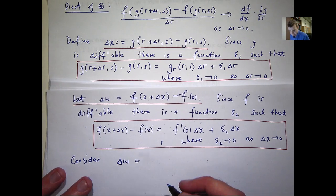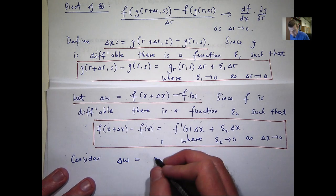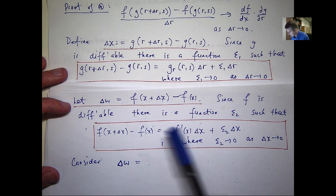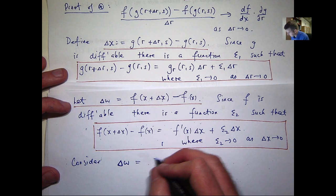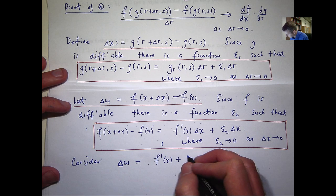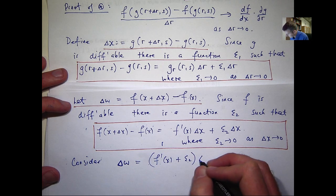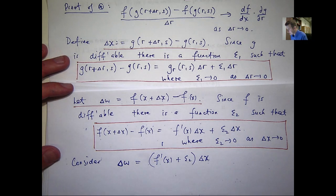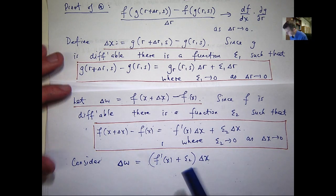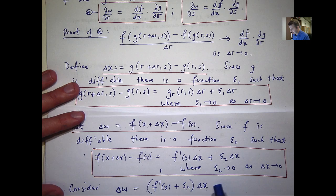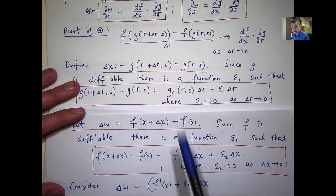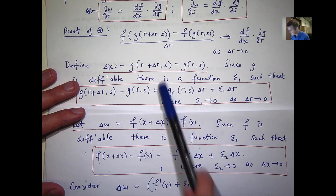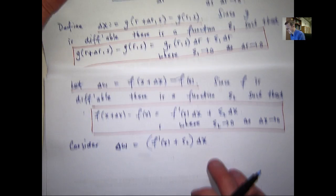So we can write this in terms of this. Now, I'm going to factor out this common factor of delta x. And what I'm going to do then is I can replace this delta x with this difference here. And I know that that difference is equal to this because g is differentiable.